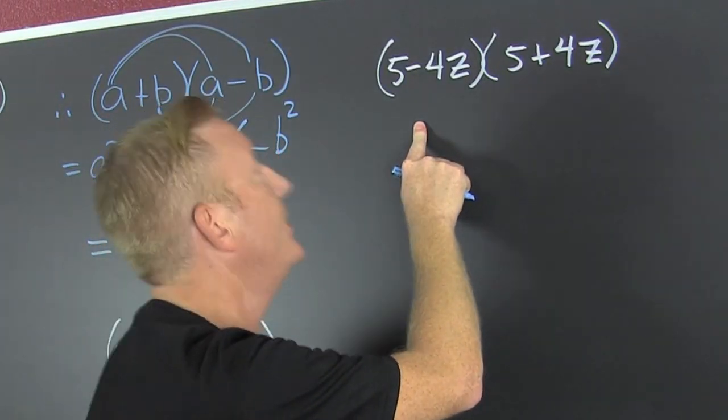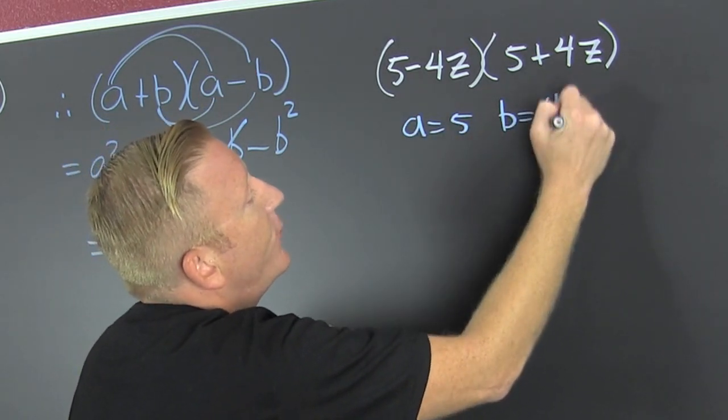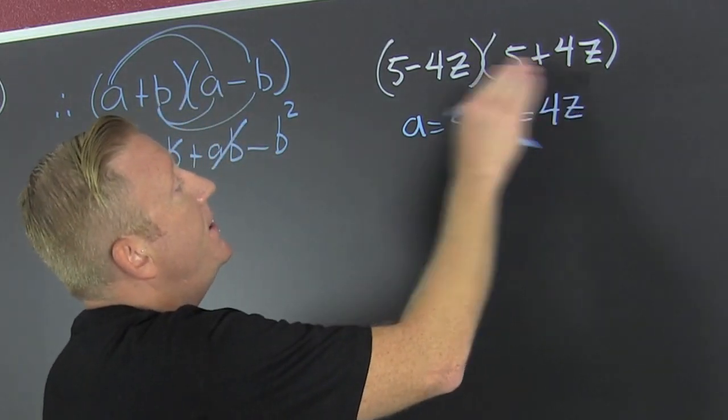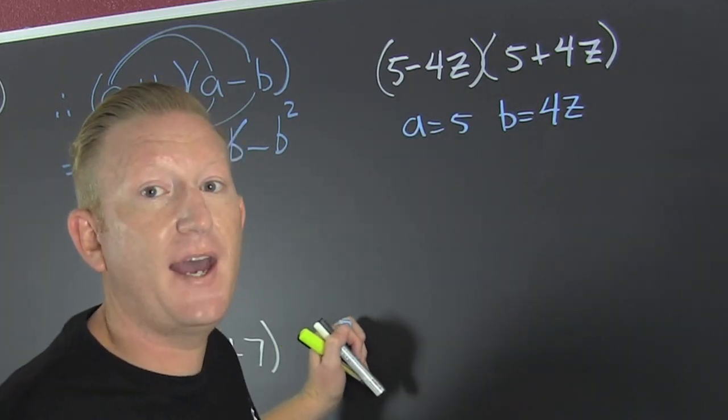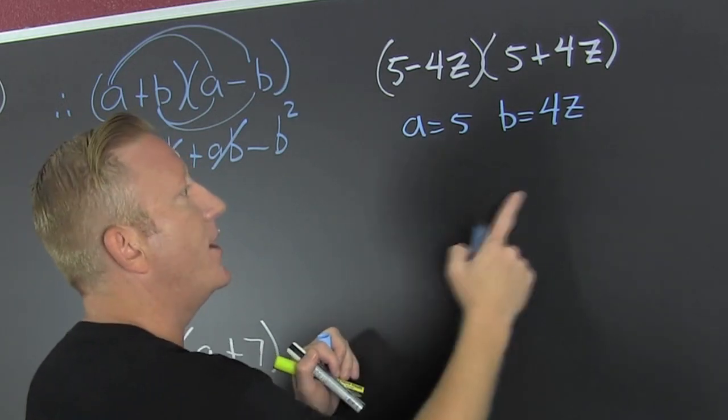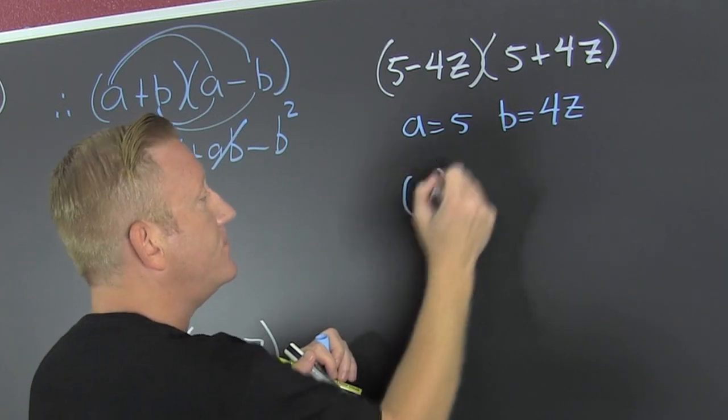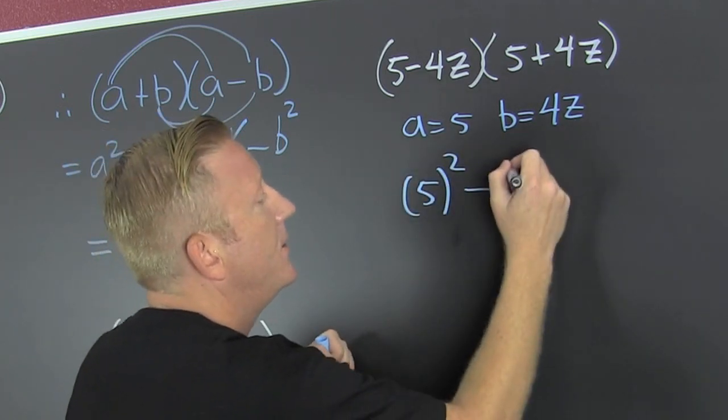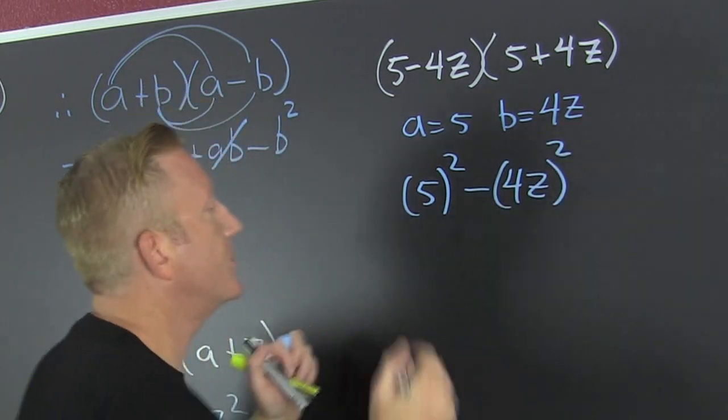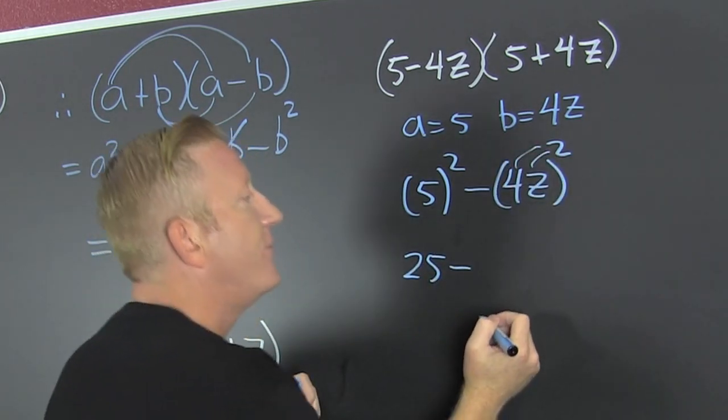So what? My a here is five and my b here is four z. What do we see? We have a plus b, a minus b. Whenever we have that special product we can just go ahead and say that it's a squared minus b squared, or more fairly, that's five squared minus four z squared.